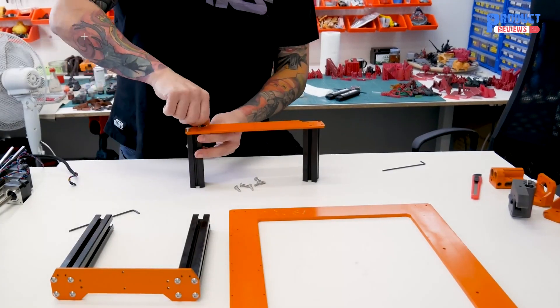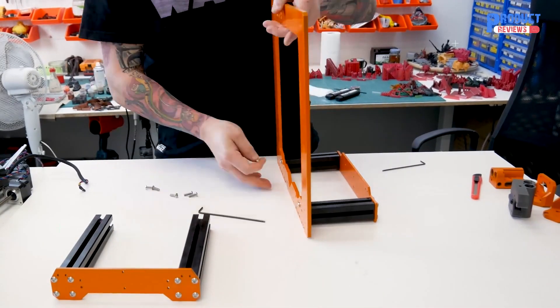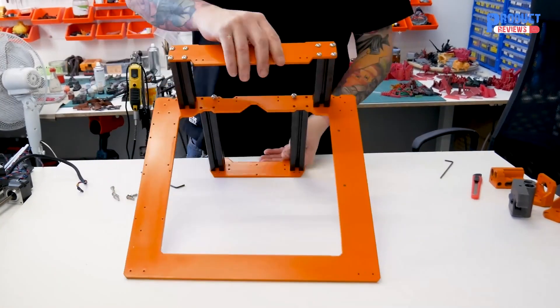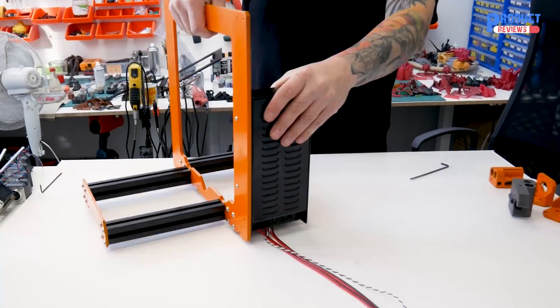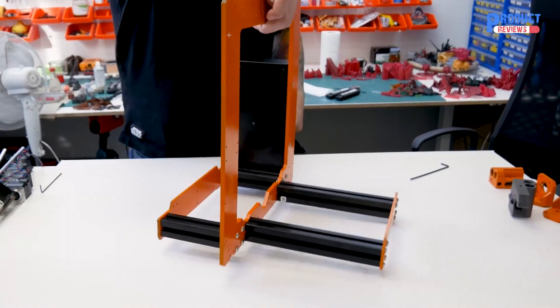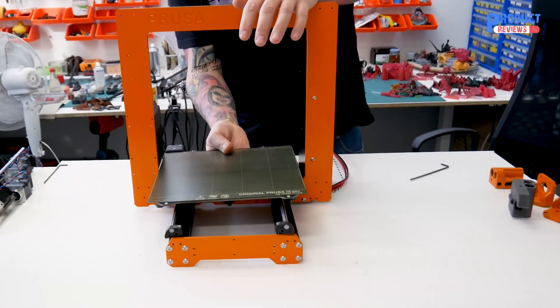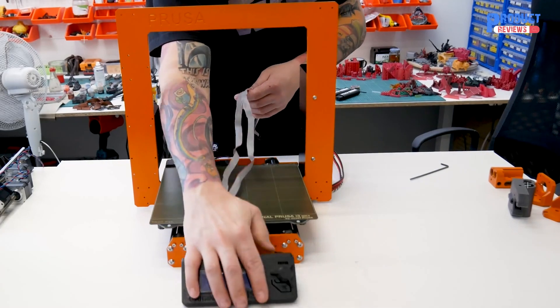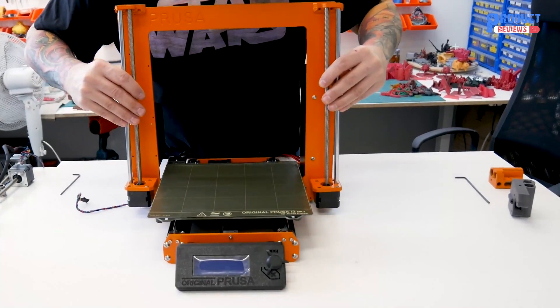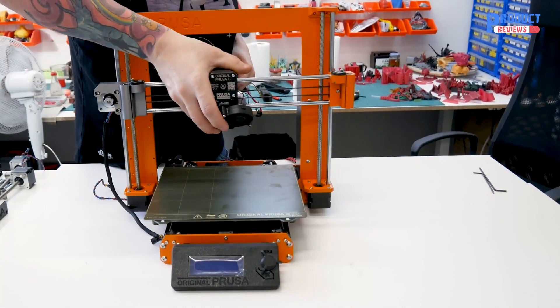The pre-assembled version of the i3 MK3S Plus is good for anyone from a rank beginner to a 3D printing veteran. It's also a great addition to a classroom or community center. You can save a bit of money by opting for the kit version, which will likely take at least an afternoon to assemble and may be best left to experienced users and tinkerers.